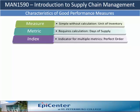There are three terms associated with performance measures, and each are slightly different. A measure is simple and requires no calculation, such as a unit of inventory for example. A metric, on the other hand, requires some calculation — days of supply is an example.